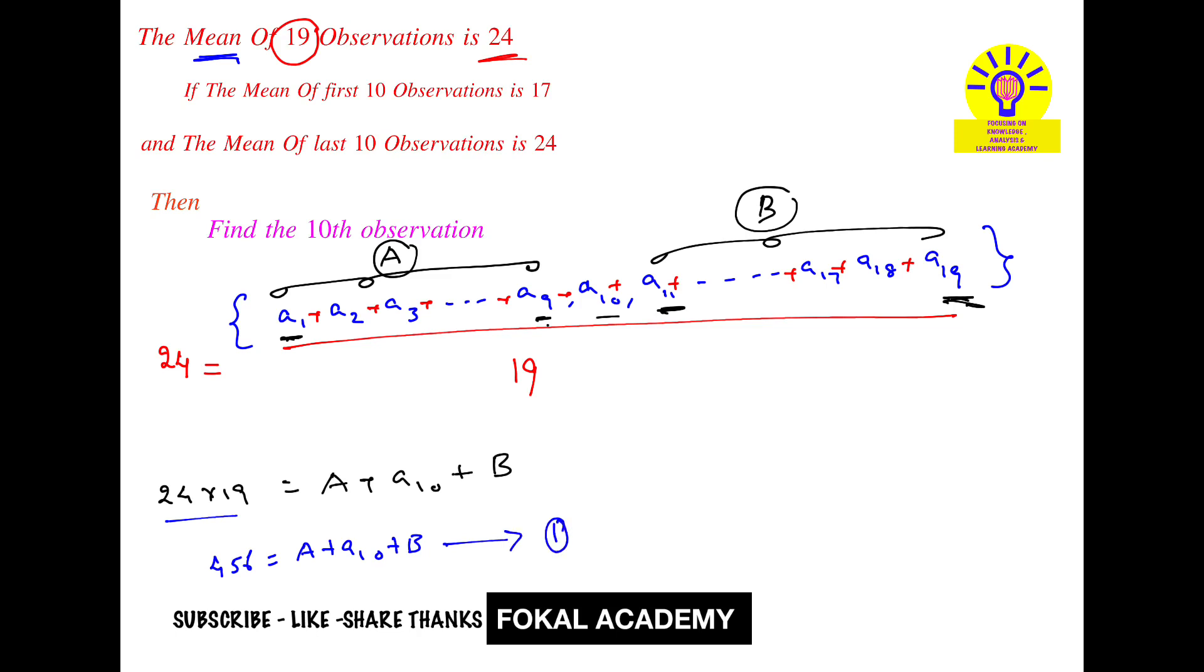Now consider the mean of the first 10 observations, from a₁ to a₁₀, which equals 17. From a₁ to a₉ we have variable A, so A plus a₁₀ divided by 10 equals 17. Therefore, A plus a₁₀ equals 170. This is Equation 2.